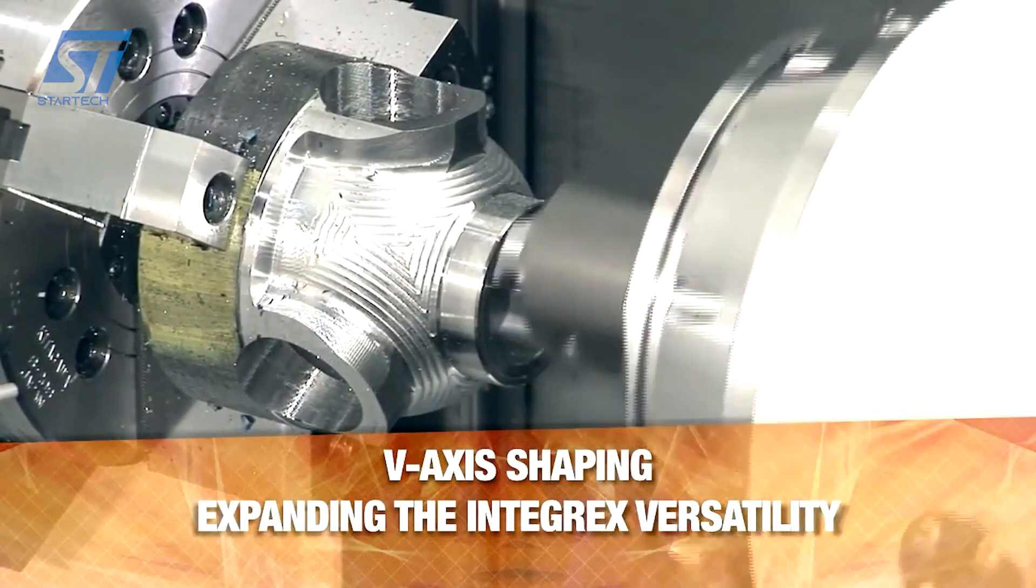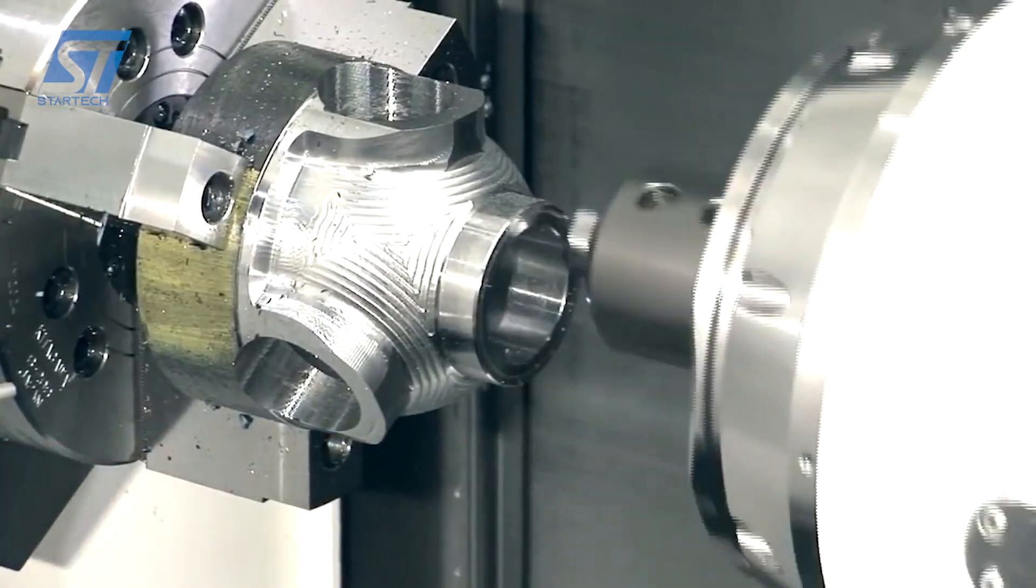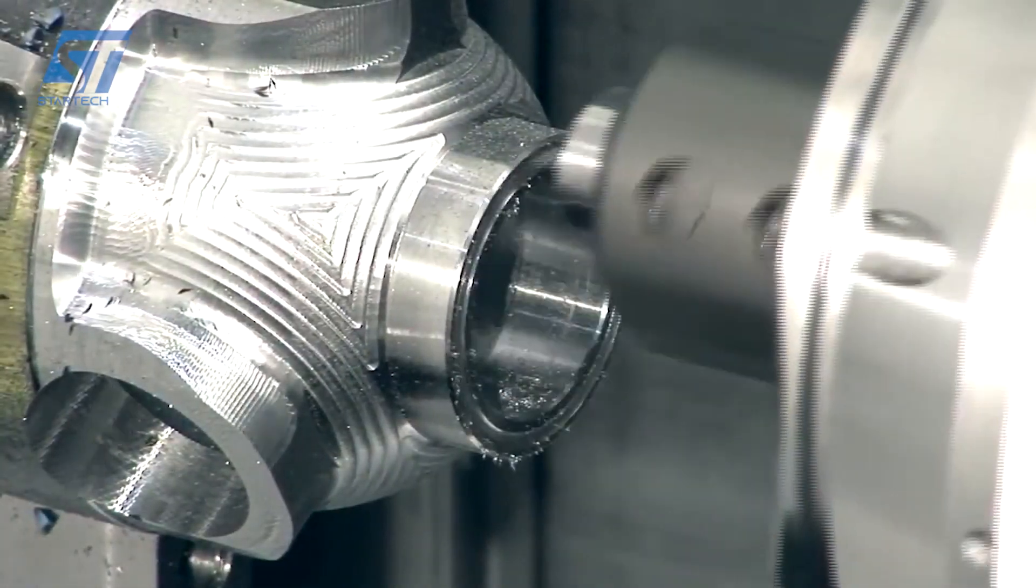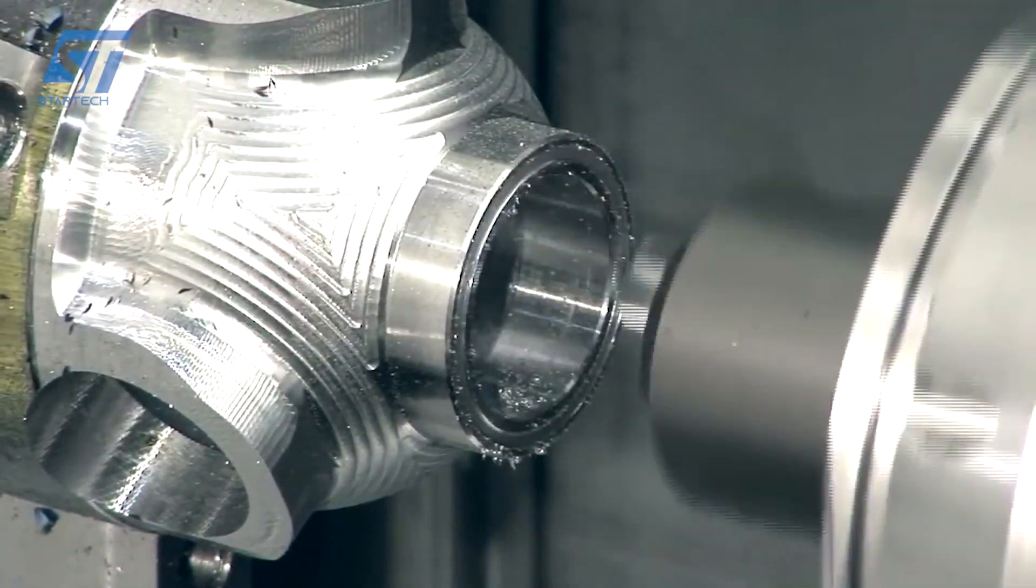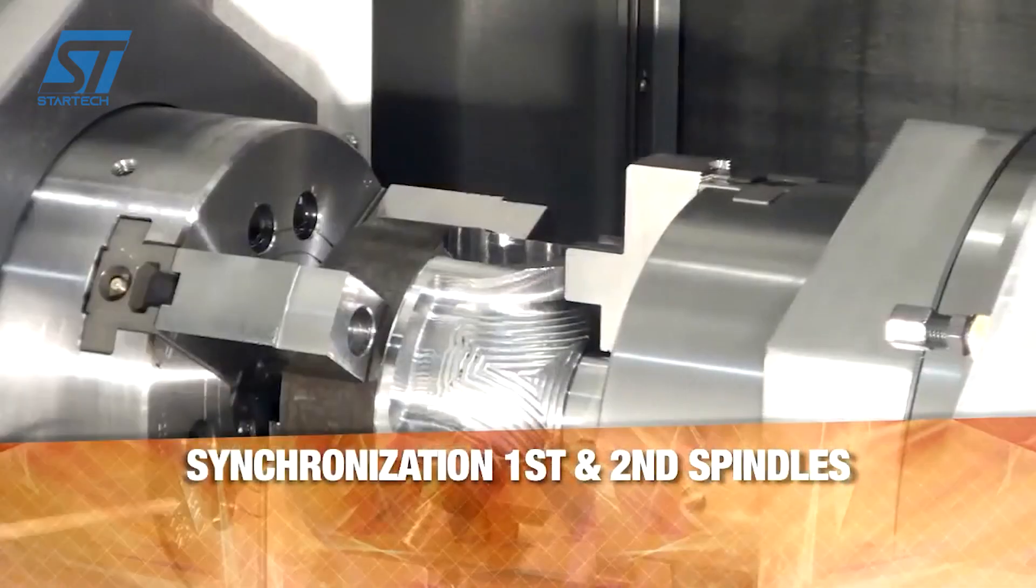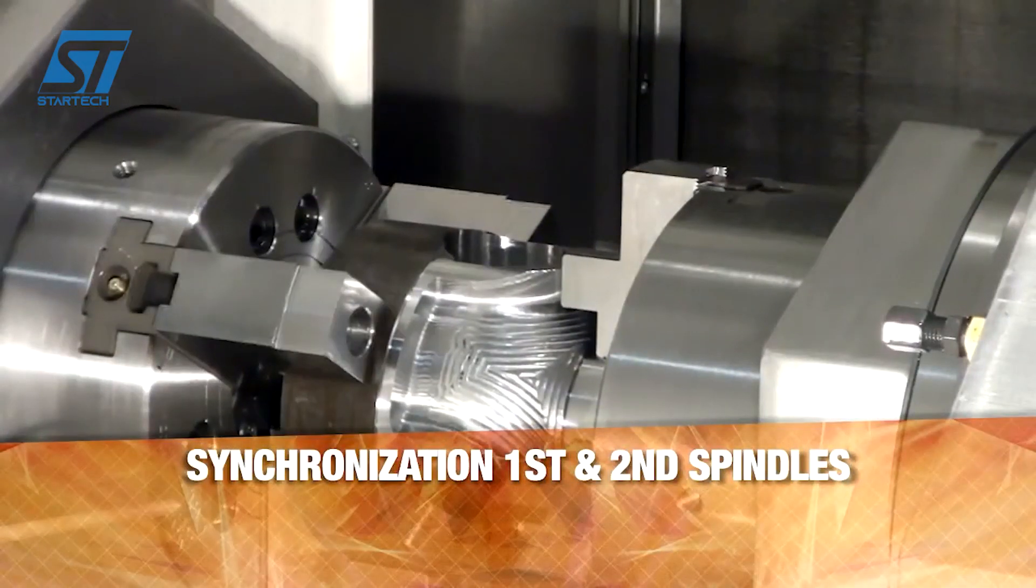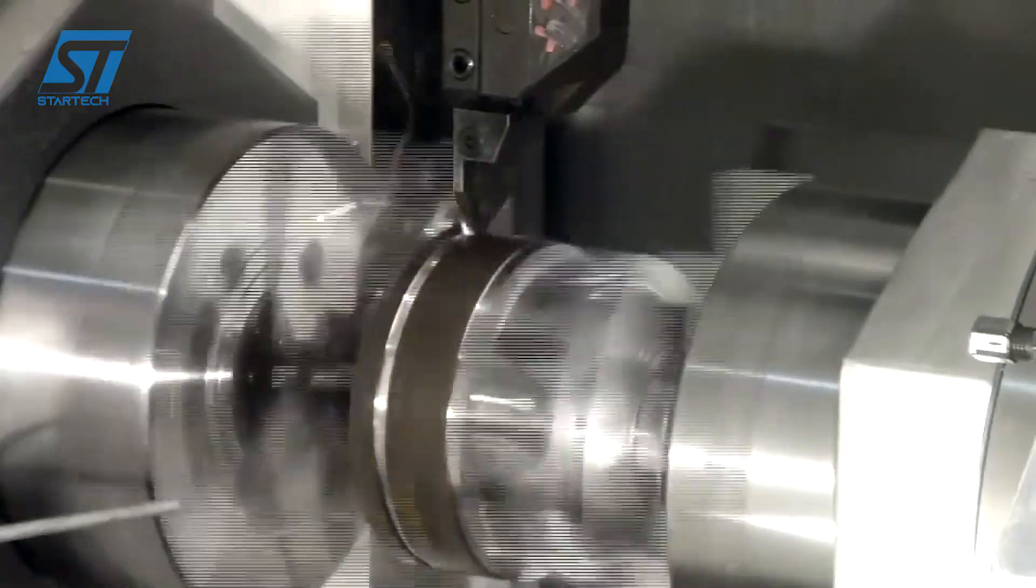The raw material, bar stock, or a blank is loaded into the main spindle. The main spindle rotates the workpiece while cutting tools mounted on the turret perform turning operations, such as facing, turning, boring, and threading.